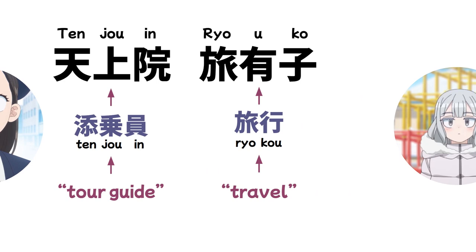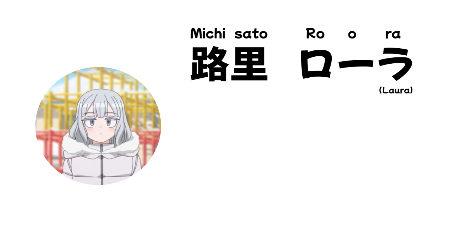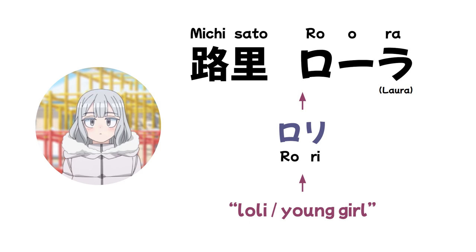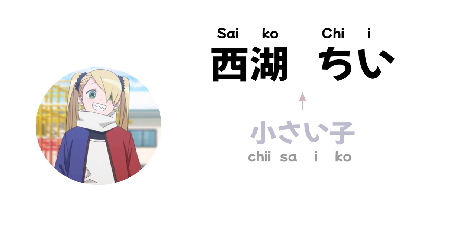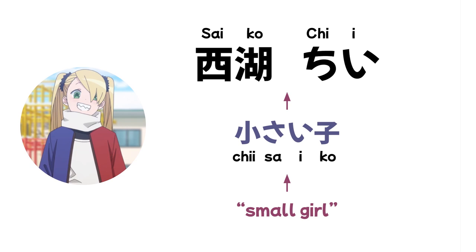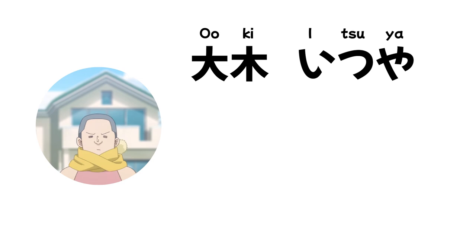Lastly are four elementary school kids in Komi-san's neighborhood whom she ends up in a snowball fight with. First is Michisato Roura — her last name can be read as 'Rori' or 'Lolly,' Japanese slang for young girl. Her friend Shiota Shota's name comes from 'Shota,' slang for young boy. Their friend Saikou Chi's name comes from 'Chisai Ko,' meaning 'small girl' — funny given how tall she is. Finally, Ooki Itsuya: a pun on 'Ooki Yatsu,' meaning 'big guy,' even though he's pretty short.